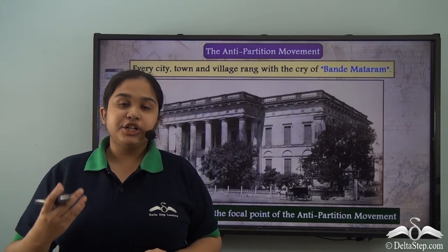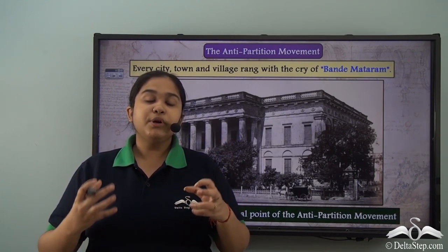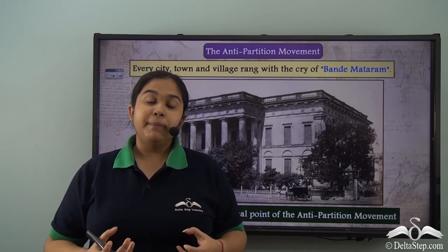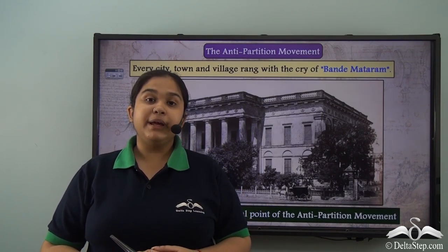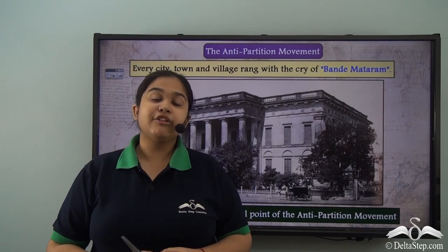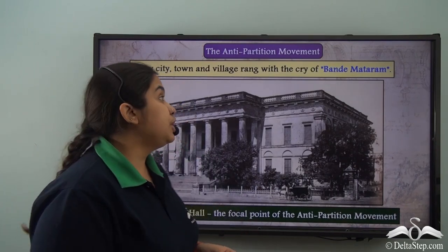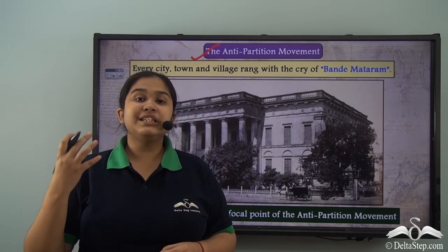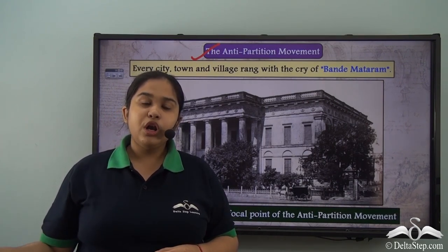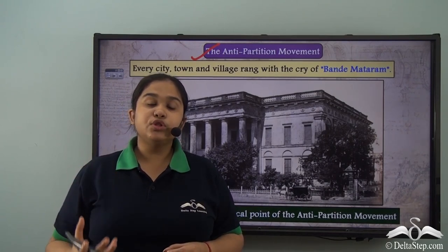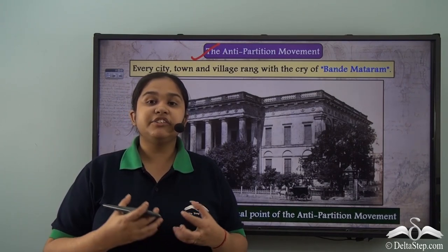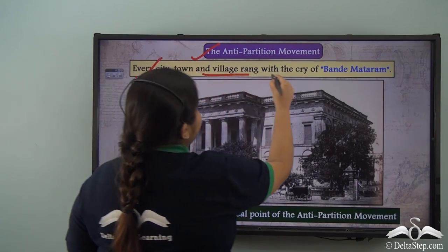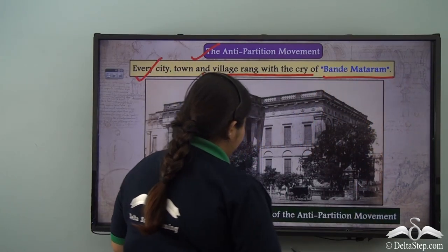With the call for partition of Bengal, Bengal shook to its core as it had become the center of the growing nationalist movement. There was a strong strike-back from the masses called the anti-partition movement, with sloganeering and people coming out on the streets to protest the breaking up of Bengal. People also recognized this as a British attempt to create a divide between Hindus and Muslims, and every city, town, and village rang with the cry of Bande Mataram.